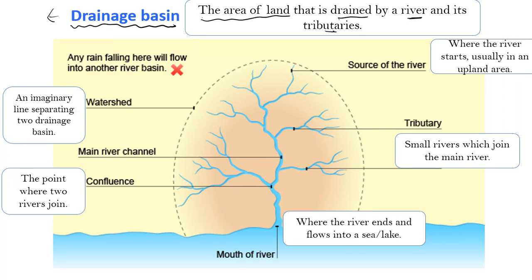You should know the parts of a drainage basin and a description of what each of them represents. The upper part where the river starts from is referred to as the source — it's where the river starts, usually in an upland area. Smaller rivers that join the main river are referred to as tributaries.